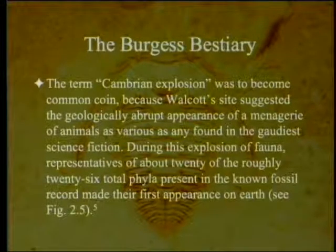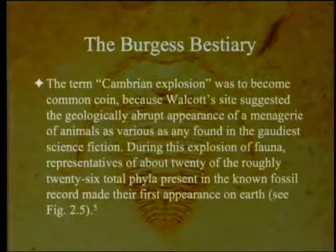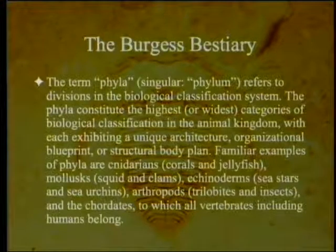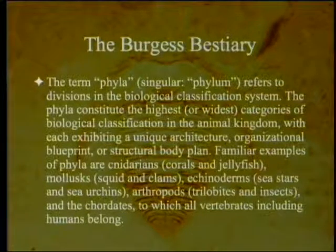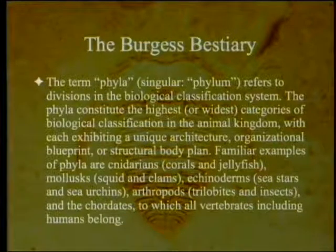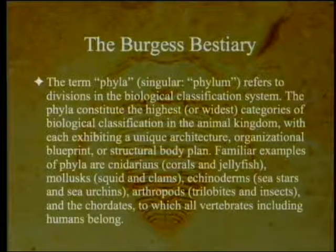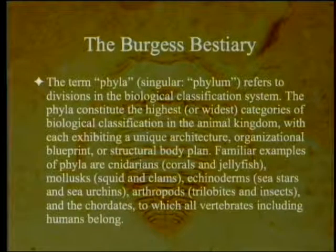During this explosion of fauna, representatives of about 20 of the roughly 26 total phyla present in the known fossil record made their first appearance on Earth. The term phyla — singular phylum — refers to divisions in the biological classification system. Phyla constitute the highest or widest categories of biological classification in the animal kingdom, each exhibiting a unique architecture, organizational blueprint, or structural body plan. Familiar examples include cnidarians (corals and jellyfish), mollusks (squid and clams), echinoderms (sea stars and sea urchins), arthropods (trilobites, insects, spiders), and the chordates, to which all vertebrates, including humans, belong.